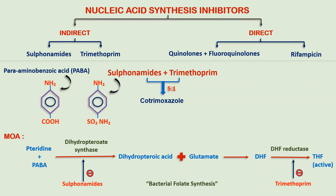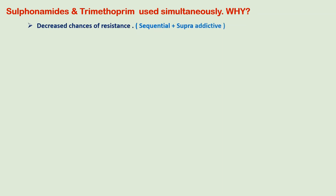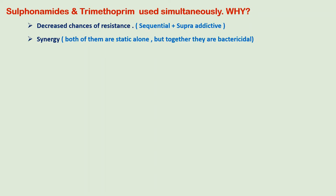Sulfonamides and trimethoprim are used in combination for mainly two reasons: there is a decreased chance of resistance, and secondly there is synergy between them, because they block two successive steps in the folic acid synthesis. This sequential blockade produces a super-additive effect. Both drugs are bacteriostatic alone, but together they are bactericidal. Both have nearly the same half-life. This optimal synergy is exhibited at a concentration ratio of sulfamethoxazole 20 to trimethoprim 1, which is obtained when given in a dose ratio of 5 to 1.